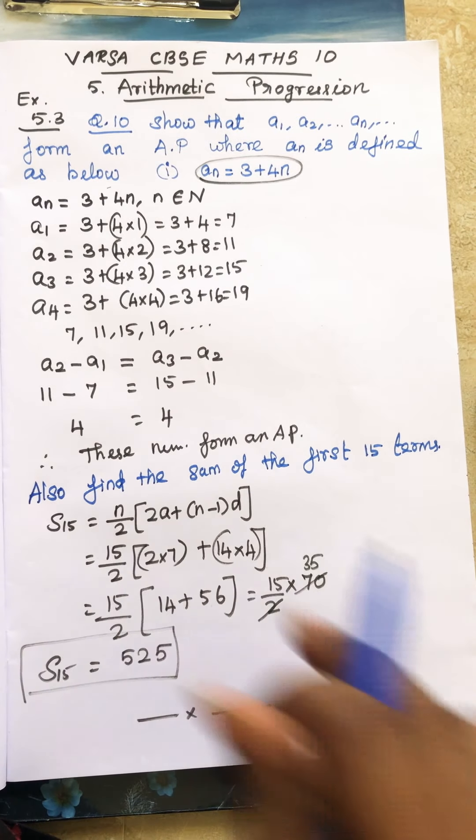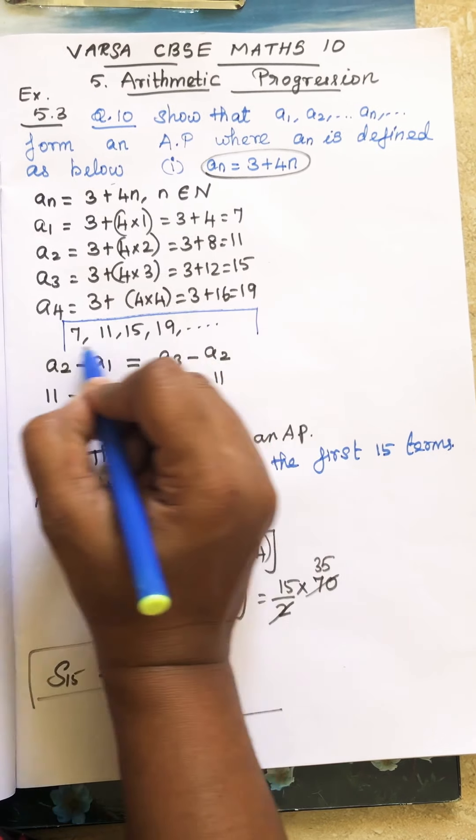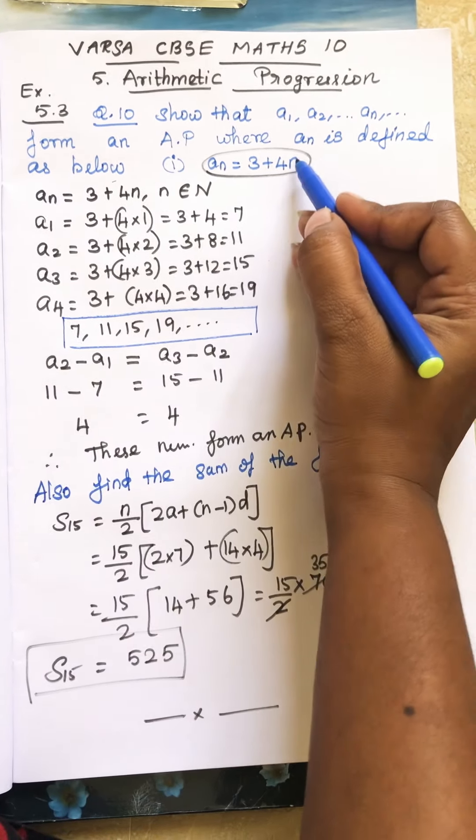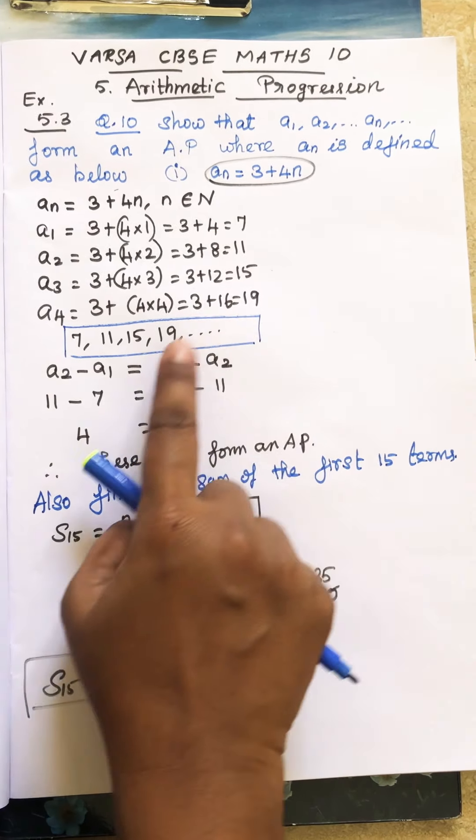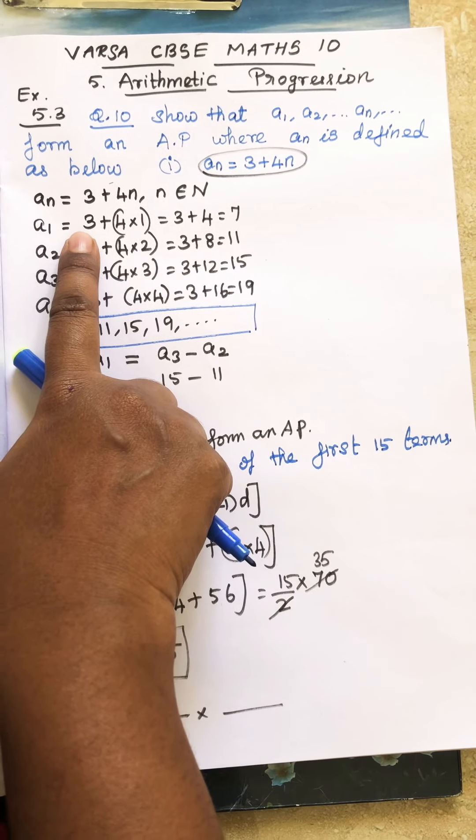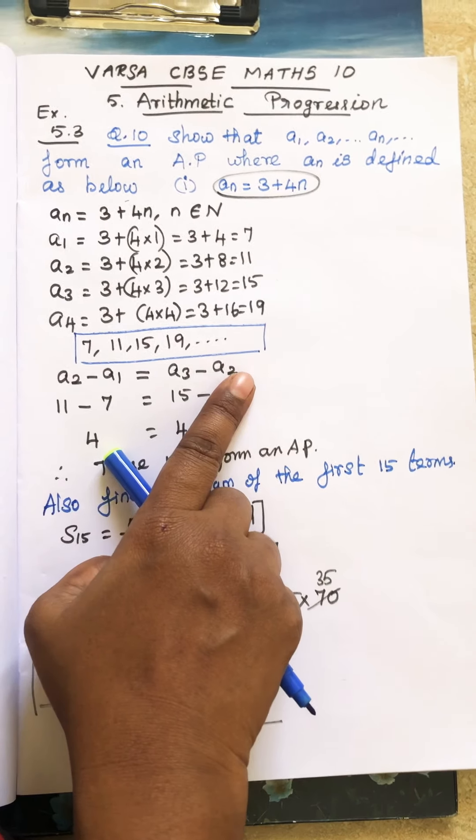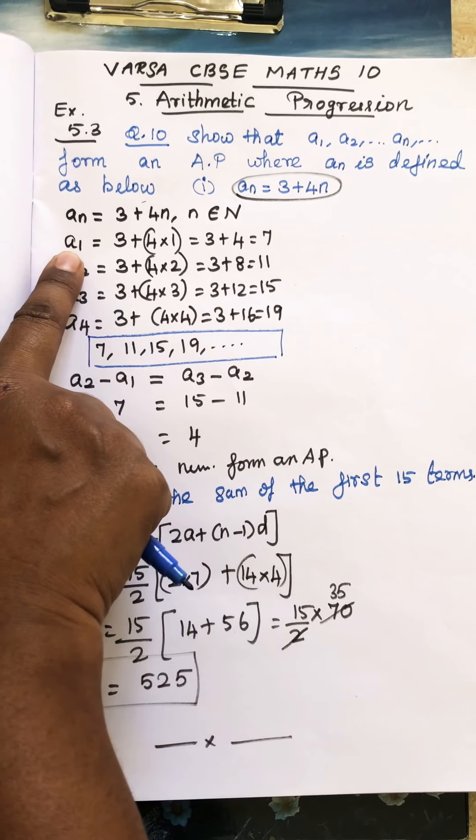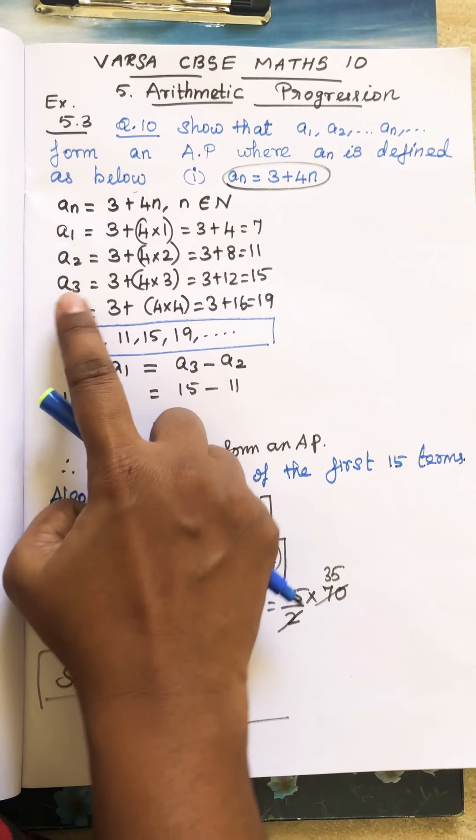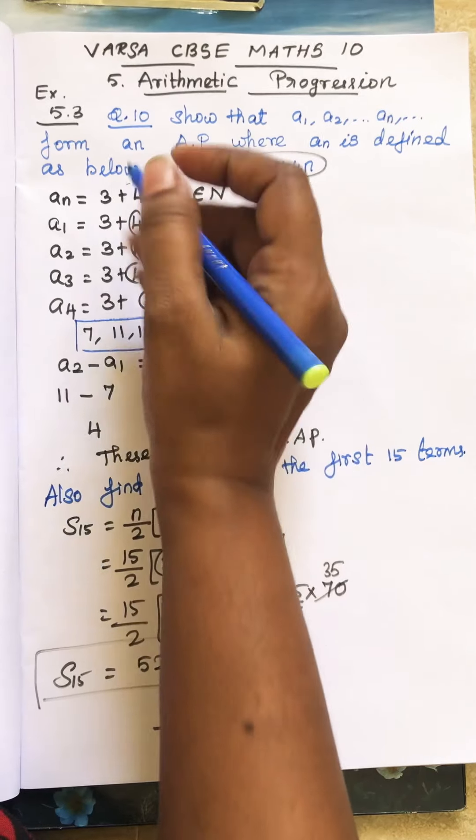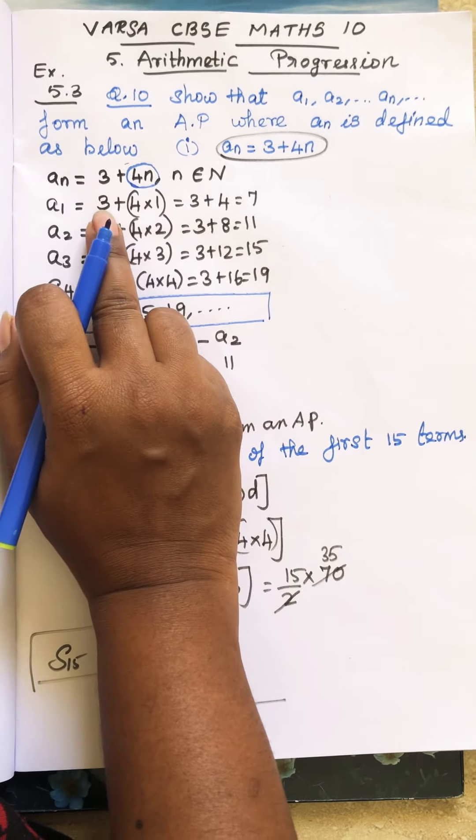So this is the general term they have given. We found by the general term the elements. So these are the elements: 7, 11, 15, 19. These are the terms. We found the terms by the general term. So finding the general term, each term is first important. How you find? You have to substitute 1, 2, 3, 4, and so far. This is 4n. It means you have to multiply, then you can add 3.